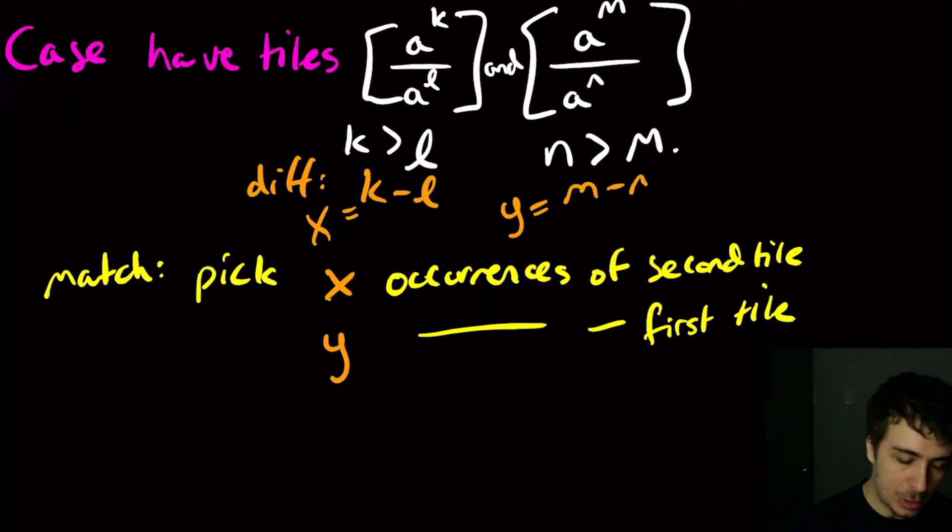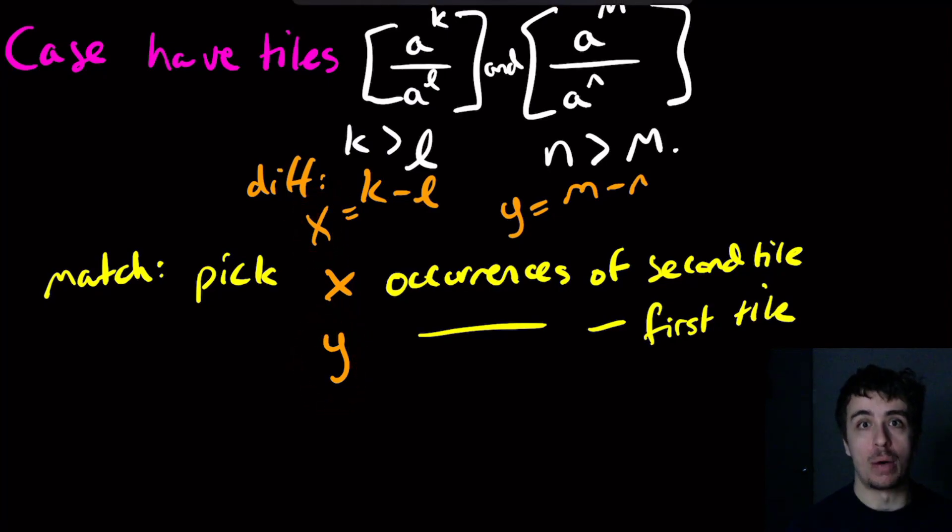So I'm going to pick X occurrences of the second tile and Y of the first, because I used A here. So I claim this is a match. So the second tile is lagging behind by Y A's every time I pick it. So I'm going to have Y times X number of A's more on the bottom than the top. And if we pick Y occurrences of the first tile, it's going to catch up by X A's every time and I pick Y of them. So I get X times Y. So minus X, Y plus X, Y equals zero.